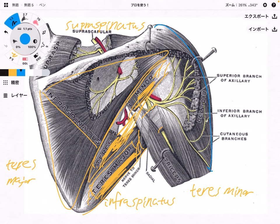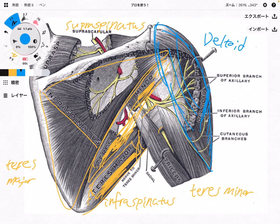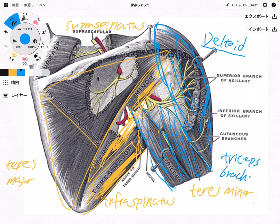Then this very big muscle we have in the shoulder joint is the deltoid muscle. Because its shape is like a triangle, that's why it is called deltoid — delta. Then last one is triceps brachii, which is an upper arm muscle. So these are the basic muscles on the posterior part of the shoulder joint.